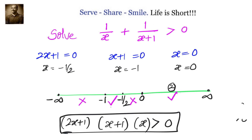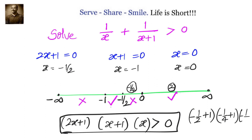Now let us check values between -1/2 and 0. Let us take x = -1/4. Substituting: 2×(-1/4) = -1/2, then (-1/2 + 1)(- 1/4 + 1)(- 1/4) = (1/2)(3/4)(-1/4). Positive into negative gives a result less than 0. So this interval does not satisfy the inequality.